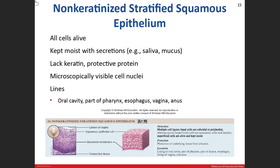In the non-keratinized type, all the cells are living, so you should be able to see the nuclei on a slide. You'll find this epithelium near the entrances and exits of your body and in moist regions — your mouth, anus, and vagina — where there are secretions of mucus and saliva. Specifically, you'll find it in the oral cavity, part of the pharynx, the esophagus, the vagina, and the anus.